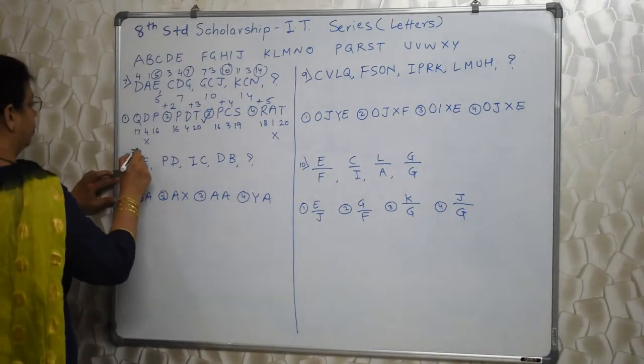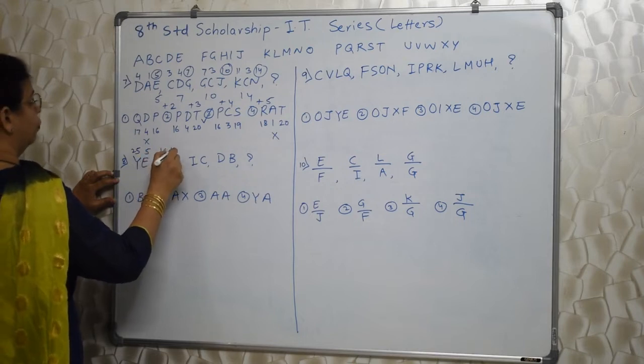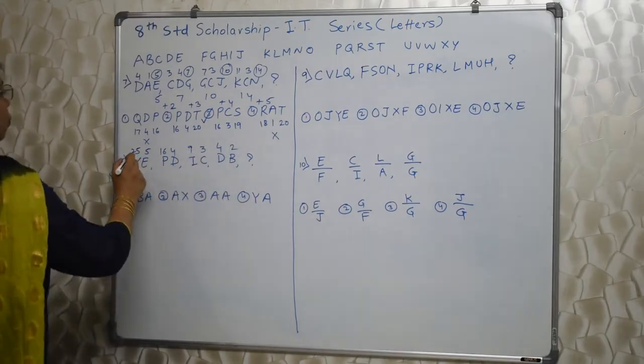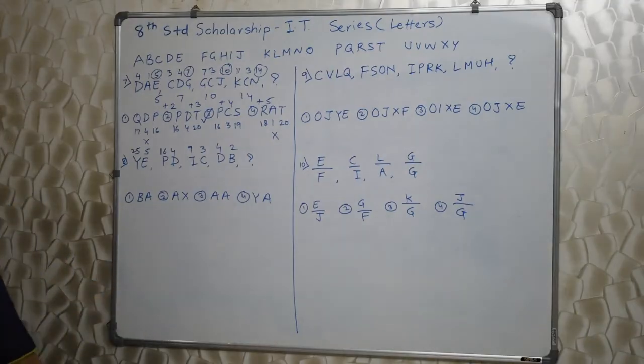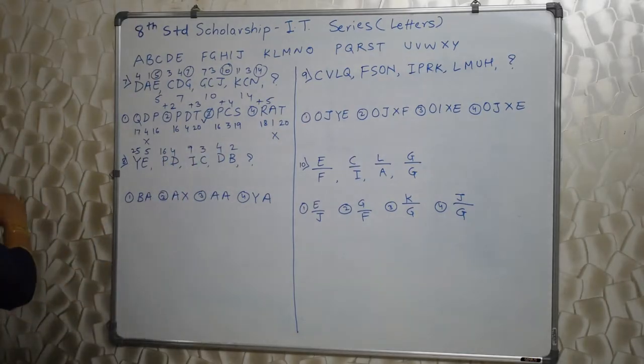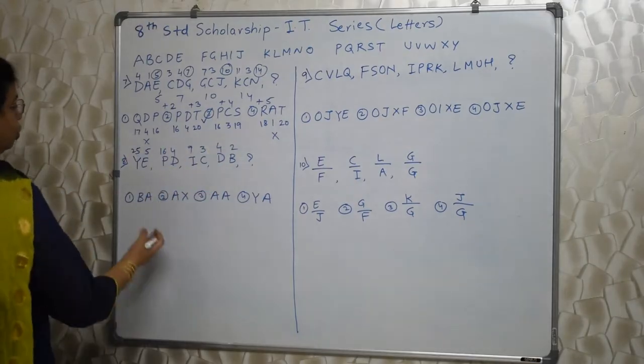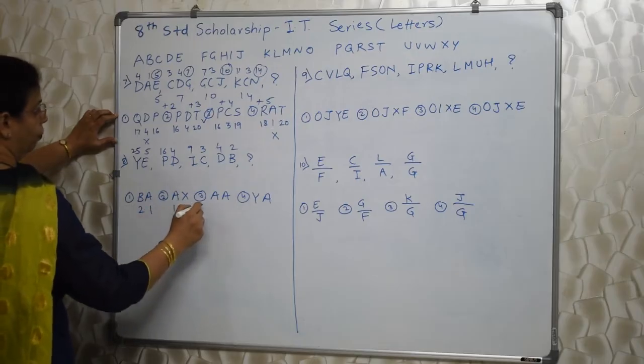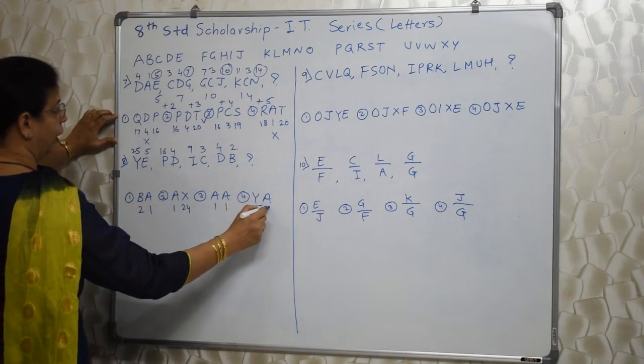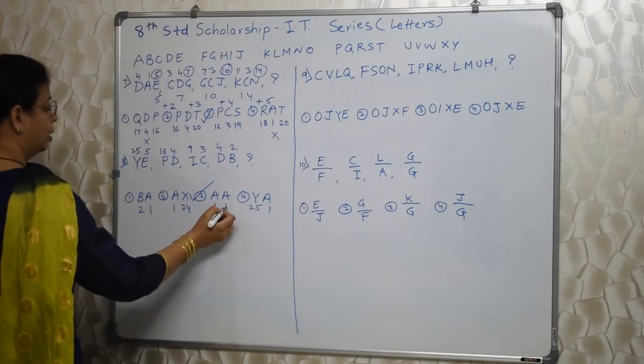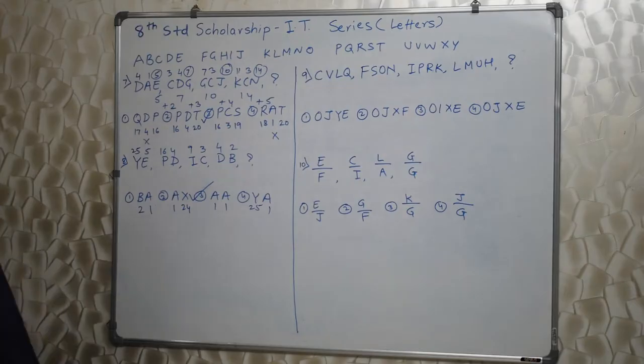Let's go ahead. Y is 25, E is 5, P is 16, D is 4, I is 9, C is 3, 4, 2. When I was writing, most of the students must have got the answer. 25, 5. 16, 4. 9, 3. 4, 2. Means square number, square root. Square number, square root. Like that they are given. So we have to take help of options. This is 2 and 1. This is 1 and 24. This is 1 and 1. This is 25 and 1. So obviously answer is 1 and 1. 1 square is 1 and square root of 1 square is 1. So 1, 1 is the answer. Third one. AA.